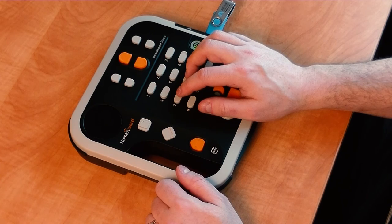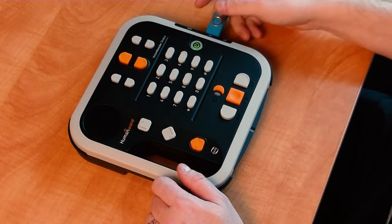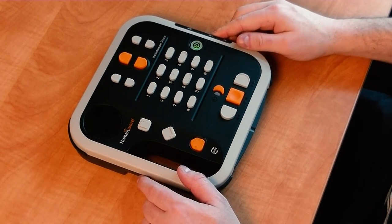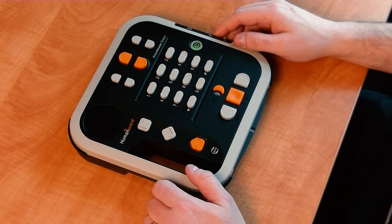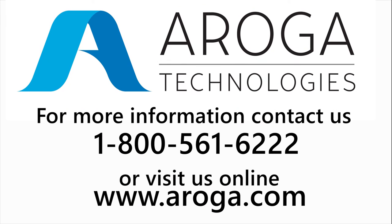So as you can see the Victor Reader Stratus 12M is very easy to use with tactile buttons and a robust navigation system. For Aroga Technologies, I'm Ryan Fleury. For more information on the Victor Reader Stratus 12M or other products Aroga carries, please call 1-800-561-6222 or visit us online at www.aroga.com.